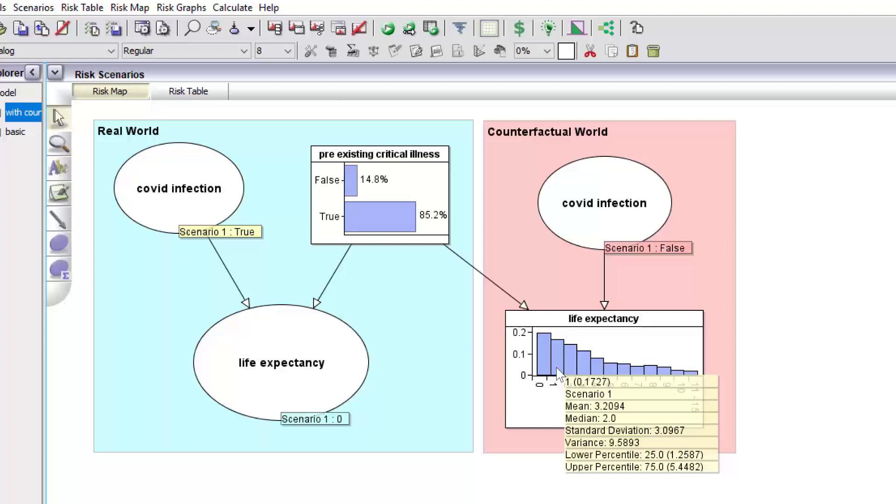the inference performed in this counterfactual model is not possible using the original model alone because we can't have Covid infection being both true and false at the same time in that model.